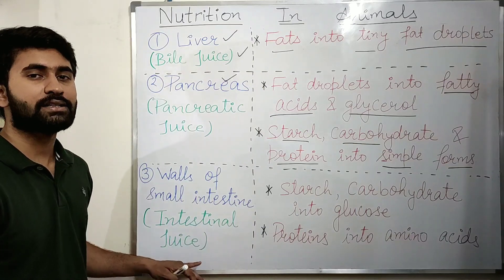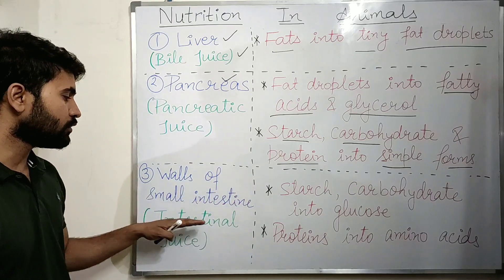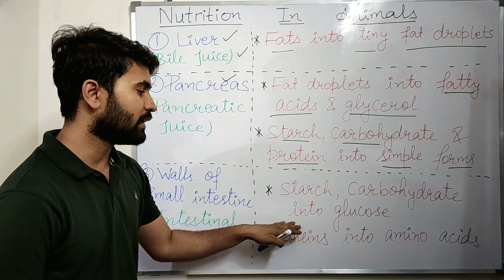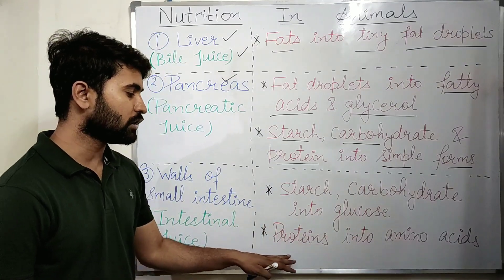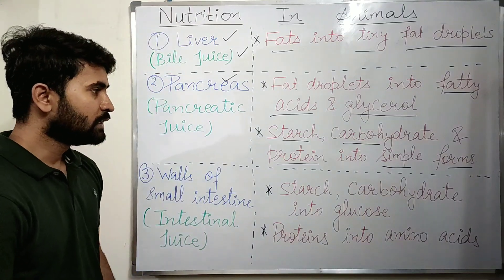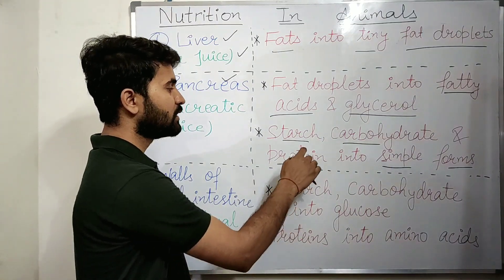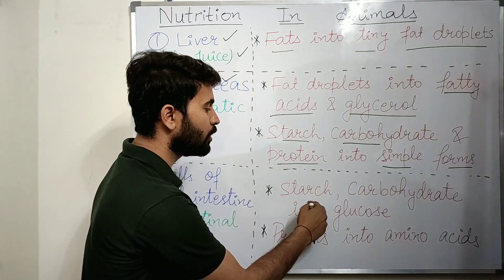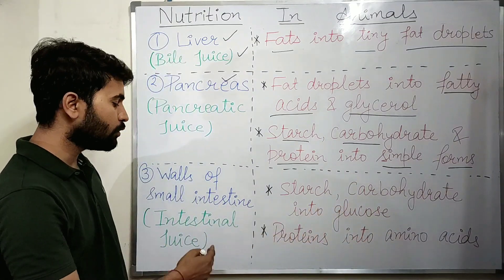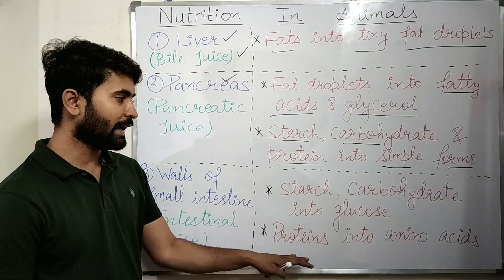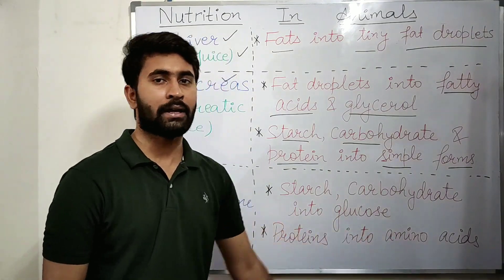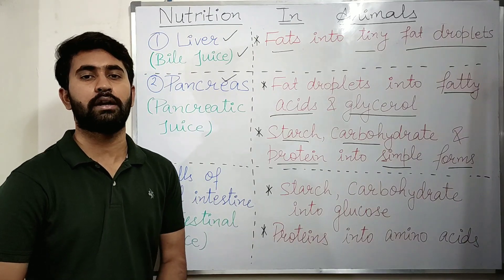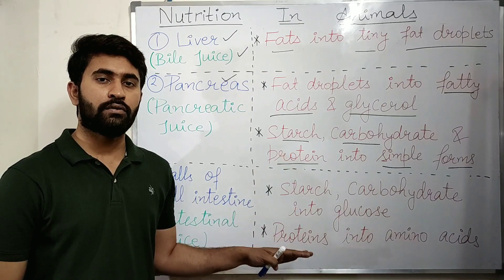Intestinal juice is released by the walls of the small intestine. It breaks starch and carbohydrates into glucose, and also converts proteins into amino acids. The pancreatic juice converts starch, carbohydrates, and proteins into simple forms, and the intestinal juice then further converts those into glucose and amino acids. These are the functions of the various juices released in the small intestine, and here the digestion of food is complete.